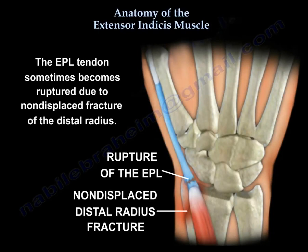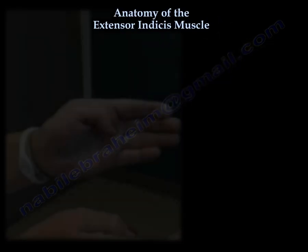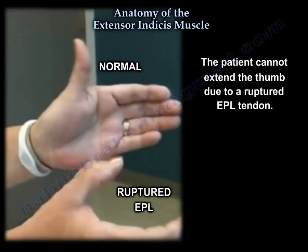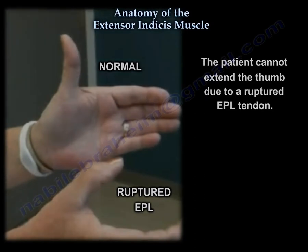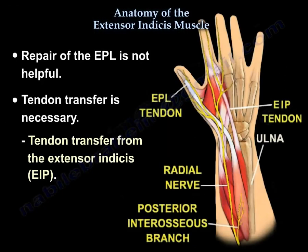The extensor pollicis longus tendon can rupture with a distal radial fracture, especially when the fracture is non-displaced. The patient may have a cast, the fracture may not appear severe, yet the patient cannot extend the thumb — indicating rupture of the extensor pollicis longus. Repair is not helpful in this case; tendon transfer is necessary, and the donor tendon is taken from the extensor indices, which has a spare tendon.